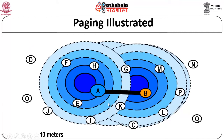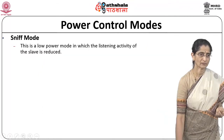This is an example of paging — once paging messages are sent out and responses are exchanged between two devices A and B, the connection is established between them.